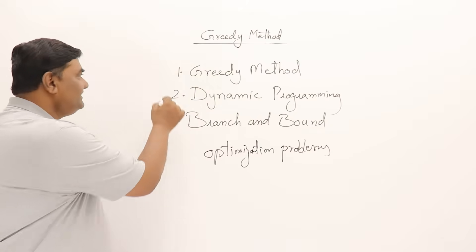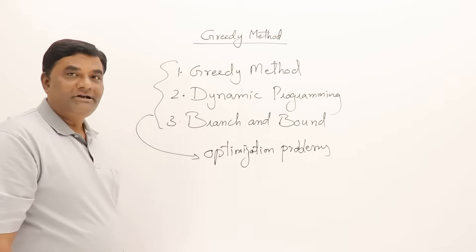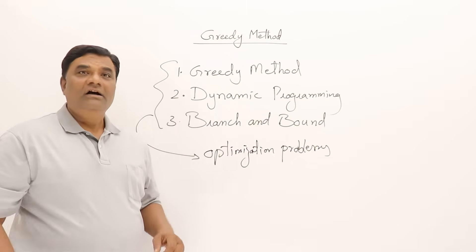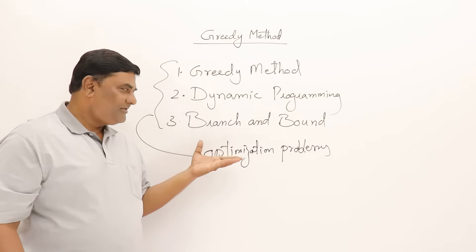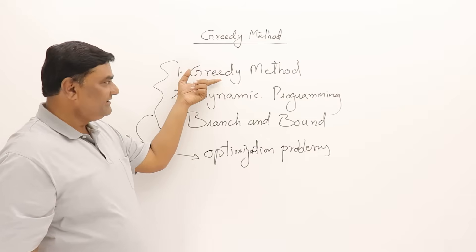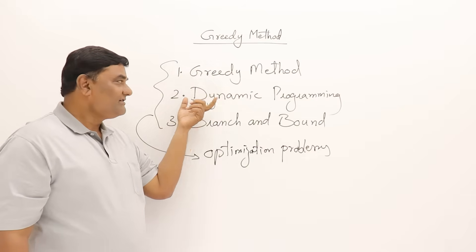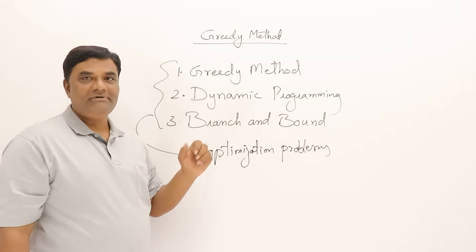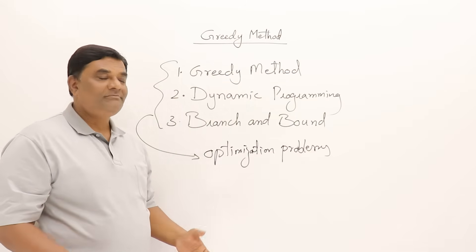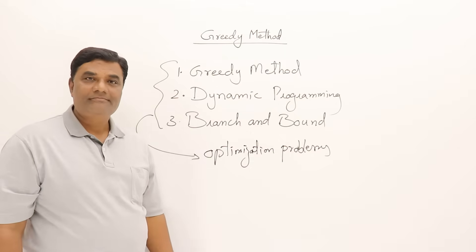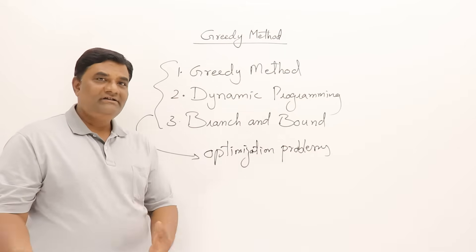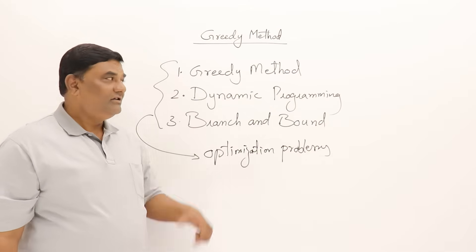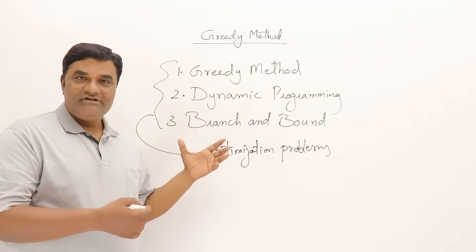There are three methods for solving optimization problems — the approach is different for each. Every problem requiring an optimal result may be suitable for one or another strategy, and for some problems all three strategies can be applied. We will learn all these strategies through problems one by one, starting with greedy method.